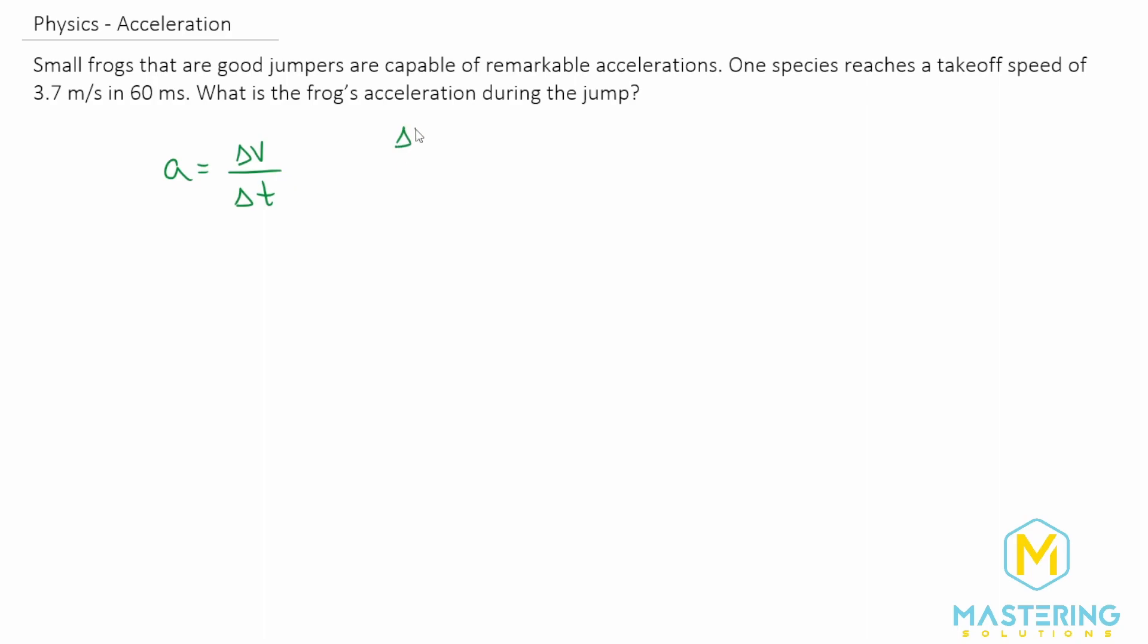Now for the change in velocity, they tell us that it has a takeoff speed of 3.7 meters per second, and it's going to be final minus initial, but the initial velocity, since it was jumping from the ground, is 0 meters per second. So this is our delta V.